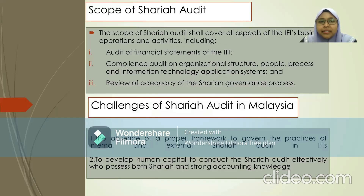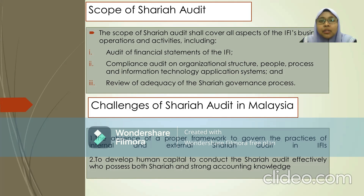Regarding the scope of Sharia audit, it will cover all aspects of the Islamic financial institution's business operations and activities. This includes three scopes: first, the audit of financial statements; second, the compliance audit covering the organisational structure, people, process, and information technology application system; and lastly, to review the efficacy of the Sharia governance process — for example, how Sharia governance in a particular Islamic financial institution is practised, and whether it has a good or weak Sharia governance process.